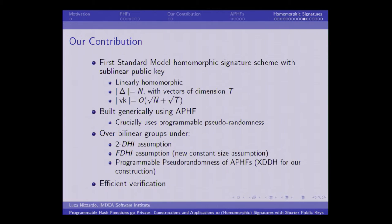Our contribution is the first standard model homomorphic signature scheme with a sublinear public key. It is linearly homomorphic for datasets of dimension N with elements that are vectors of dimension T, and has a public key linear in √N + √T. It is built generically using asymmetric programmable hash functions with the pseudo-randomness property. The assumptions are the 2-Diffie-Hellman inversion assumption, a new constant-size assumption called the flexible Diffie-Hellman assumption, and the programmable pseudo-randomness of APHFs proven under external DDH. We also have an efficient two-phase verification procedure with offline and online phases.